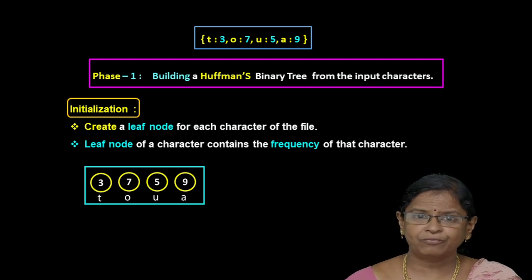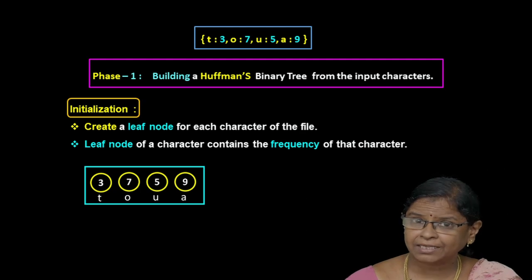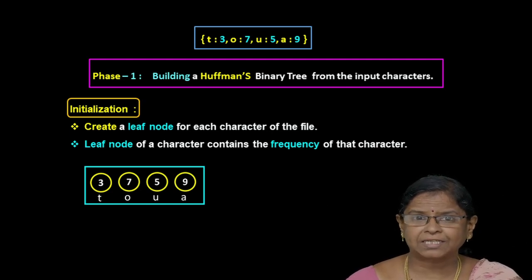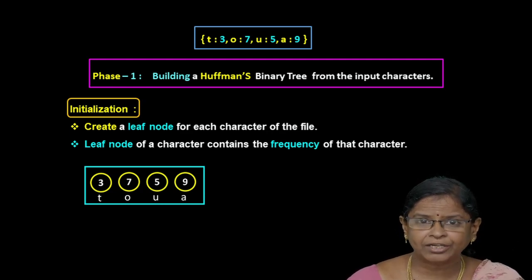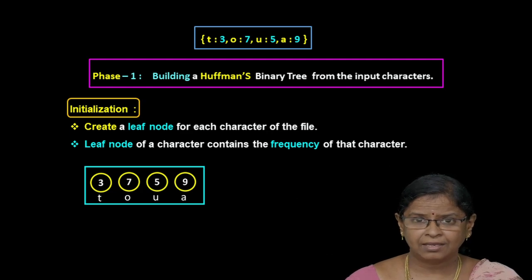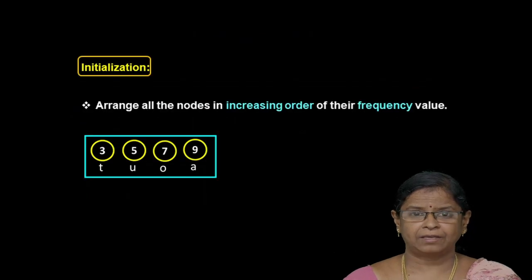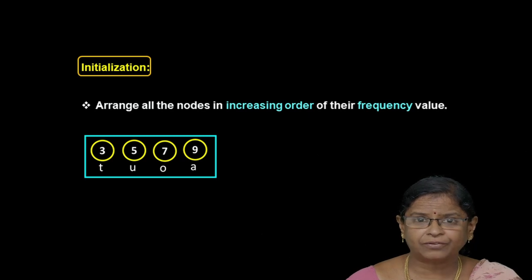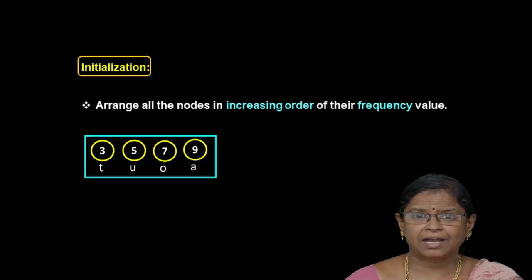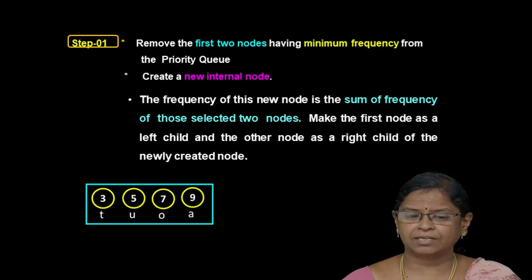Now we move on to Phase 1: construction of the Huffman tree. We have four unique characters. First, we initialize the priority queue with n pointers; all nodes are treated as leaf nodes. The four nodes contain characters T, O, U, A with frequencies 3, 7, 5, and 9 respectively. We then arrange the nodes from lowest frequency to highest frequency. The priority queue now consists of T, U, O, A with frequencies 3, 5, 7, and 9. We then remove the first two nodes with frequencies 3 and 5 (characters T and U).